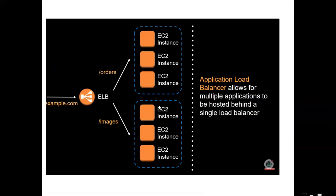That is why you can use a Classic Load Balancer or do a single load balance with your Application Load Balancer using price-based or path-based options. That is why there are three different types of load balancers available in AWS.